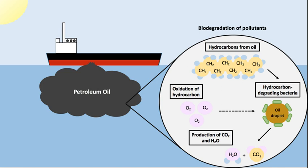The increasing amount of bacterial genomic data provides new opportunities for understanding the genetic and molecular bases of the degradation of organic pollutants. Aromatic compounds are among the most persistent of these pollutants, and lessons can be learned from the recent genomic studies of Burkholderia xenovorans LB400 and Rhodococcus sp. strain RHA1, two of the largest bacterial genomes completely sequenced to date. These studies have helped expand our understanding of bacterial catabolism, non-catabolic physiological adaptation to organic compounds, and the evolution of large bacterial genomes.